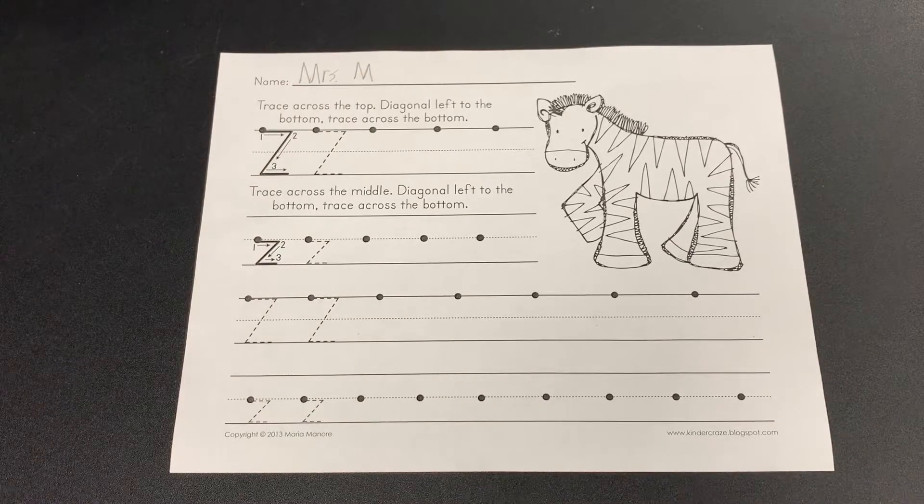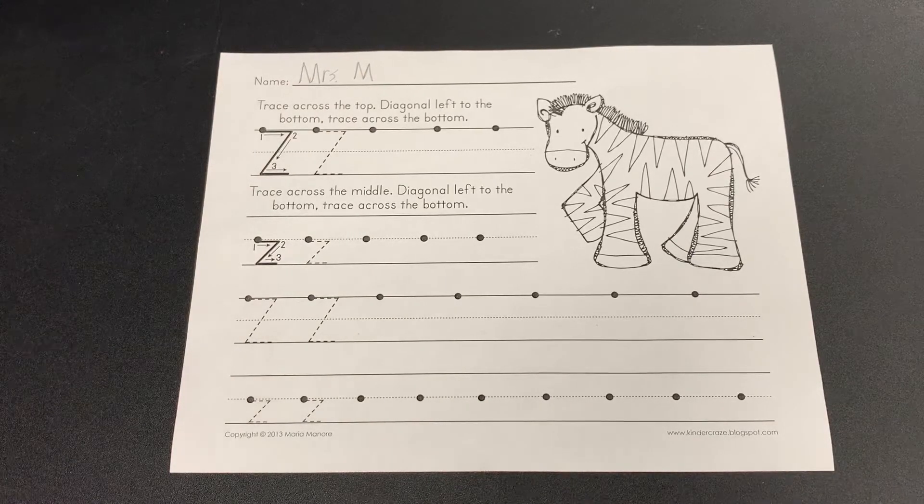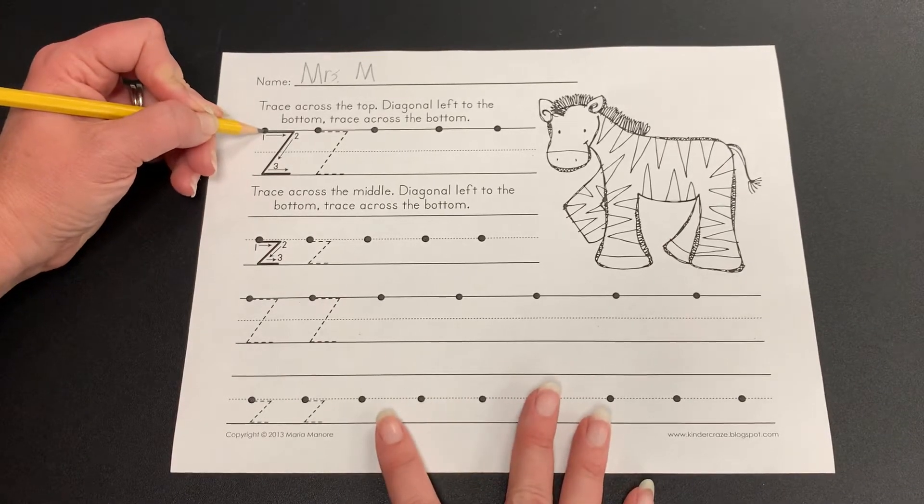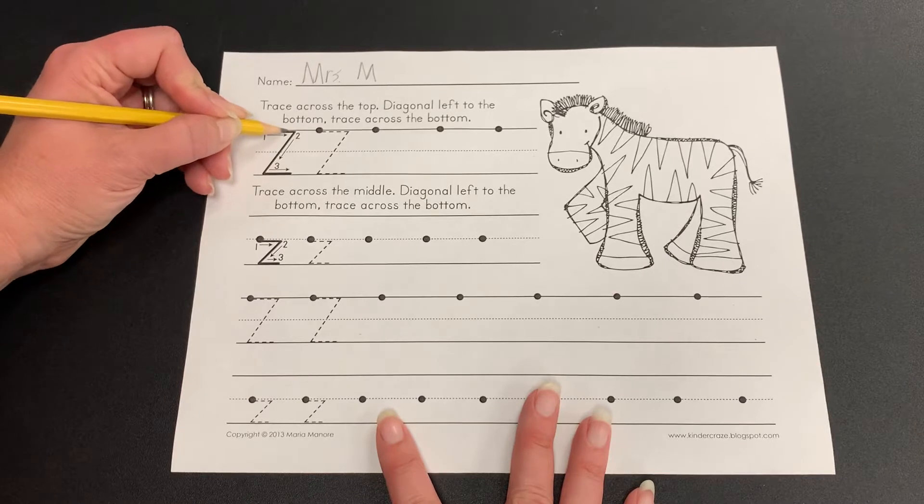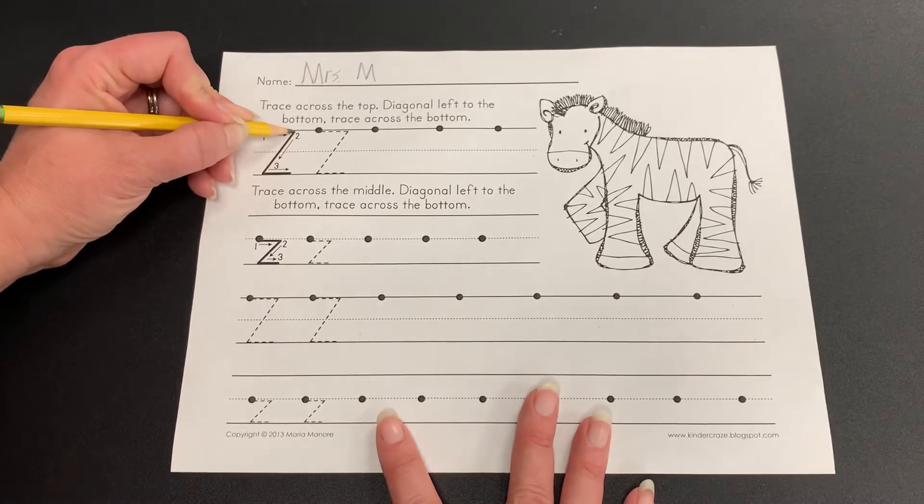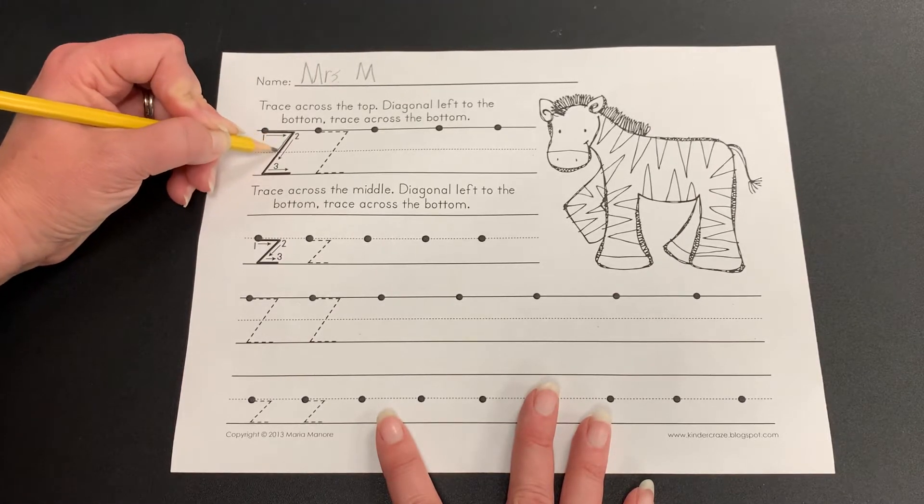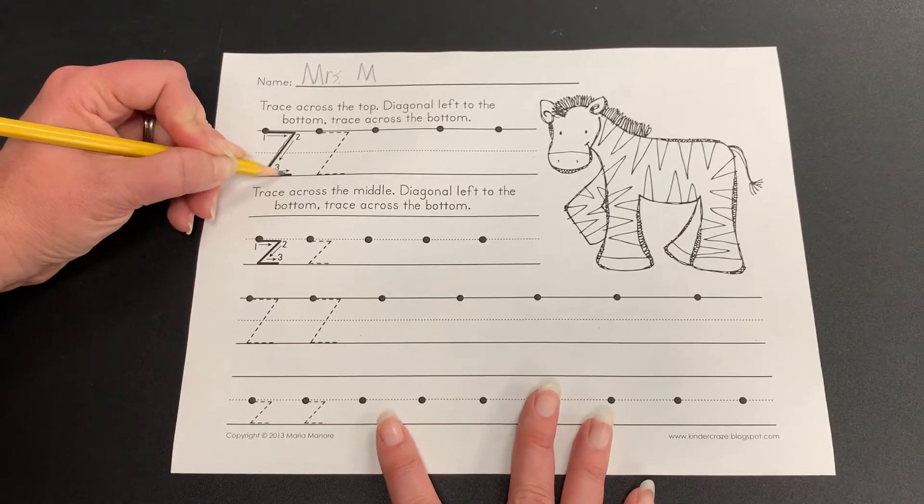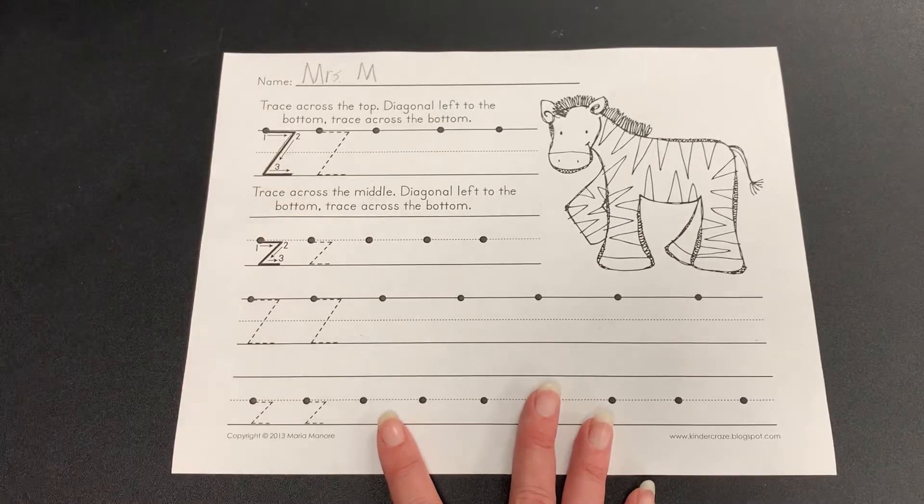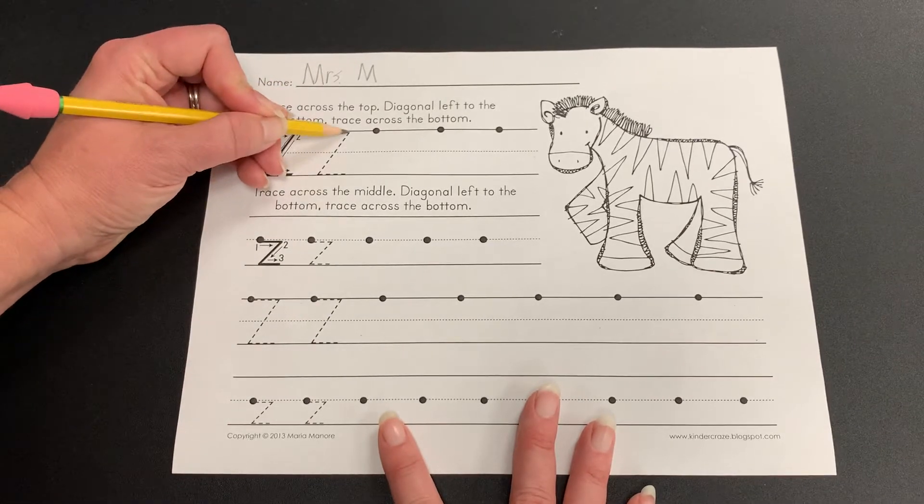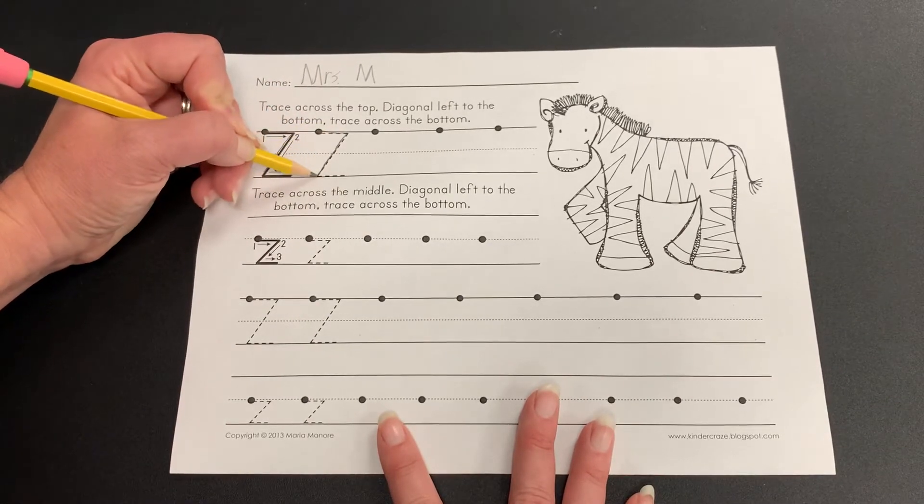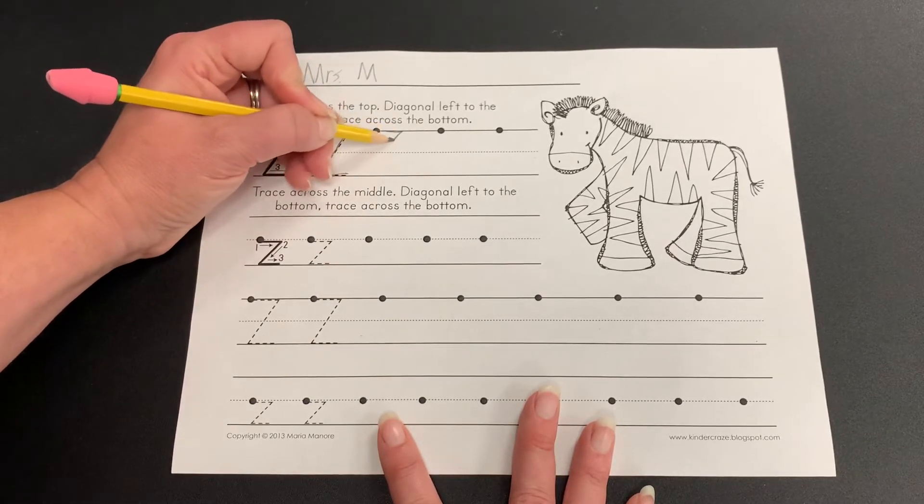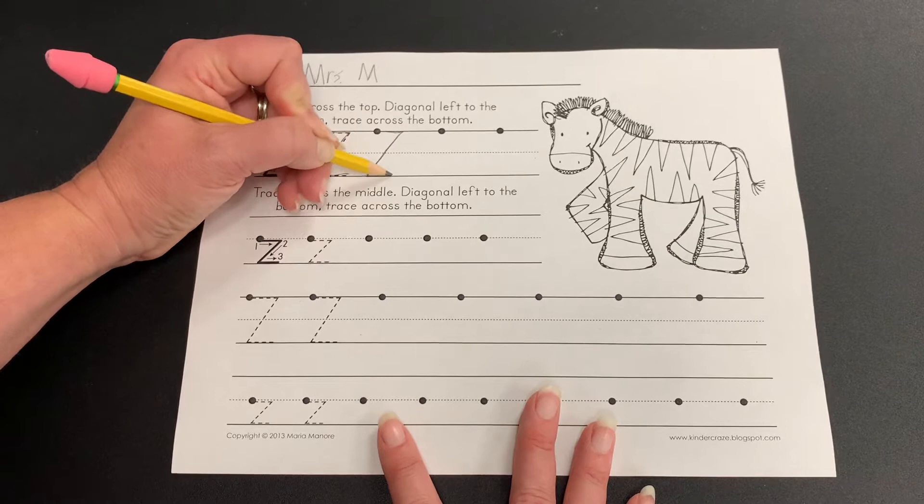So I'm going to practice making some capital letter Z's. I'm gonna put my pencil on the dot and make a straight line going across this top line. Then I'm gonna make a slanted line going down and then a straight line going across the bottom. So it goes straight, slanted, straight. Let's try again. Straight, slanted, straight.